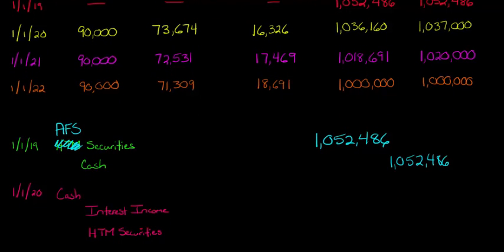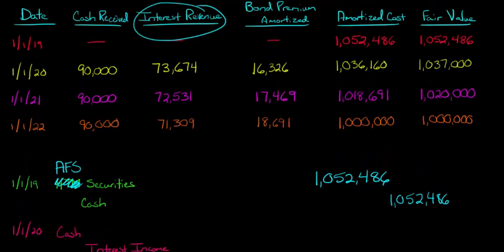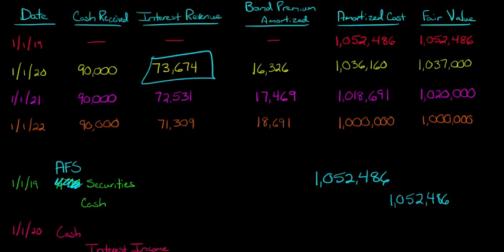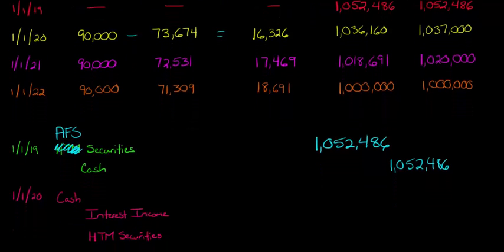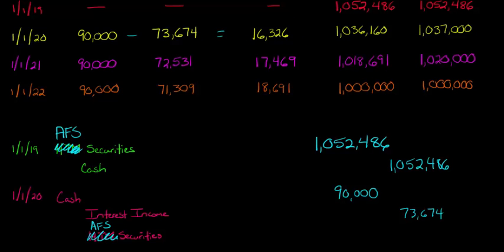We're going to have that same entry when we recognize the interest. Going back to our table, the interest revenue is going to be $73,674. We're receiving cash of $90,000, and the difference — $90,000 minus the interest revenue — equals the amount of bond premium that we're amortizing, which reduces the value of our asset. So we debit cash for $90,000, credit interest revenue for $73,674, and then credit Available for Sale Securities for the difference — that amount of the bond premium amortized.